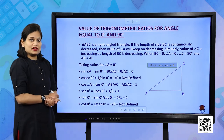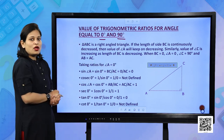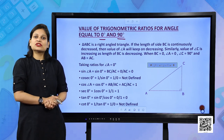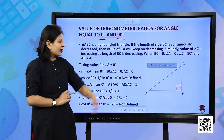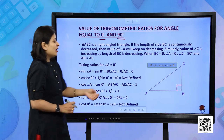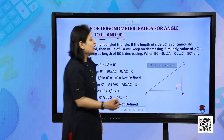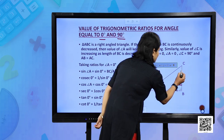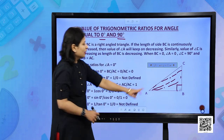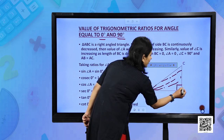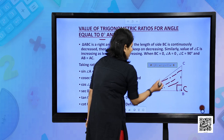Now we discuss trigonometric ratios for angle equal to 0 degree and 90 degree. We construct a right angle triangle ABC right angled at B. If I decrease the length of side BC — keep on decreasing — the point C and B will coincide.